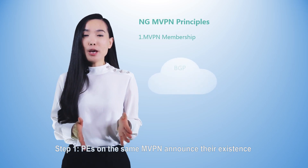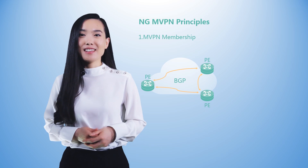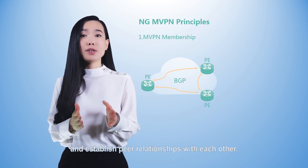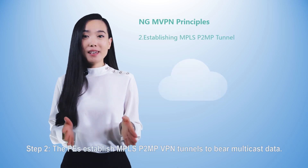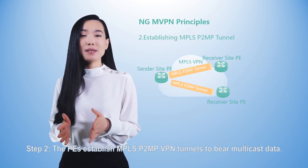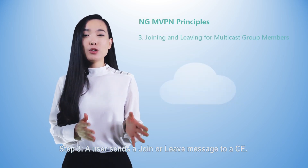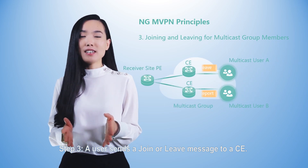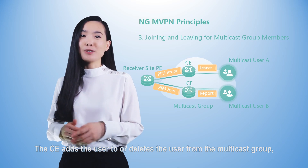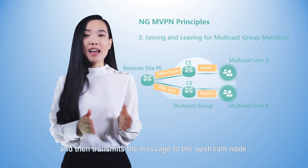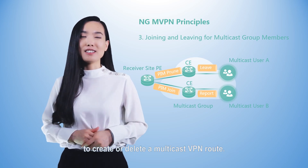Step 1: PEs on the same MVPN announce their existence through BGP messages so that they can discover each other and establish peer relationships with each other. Step 2: The PEs establish MPLS P2MP VPN tunnels to bear multicast data. Step 3: A user sends a join or leave message to a CE; the CE adds the user to or deletes the user from the multicast group, converts the message, and then transmits the message to the upstream node to create or delete a multicast VPN route.